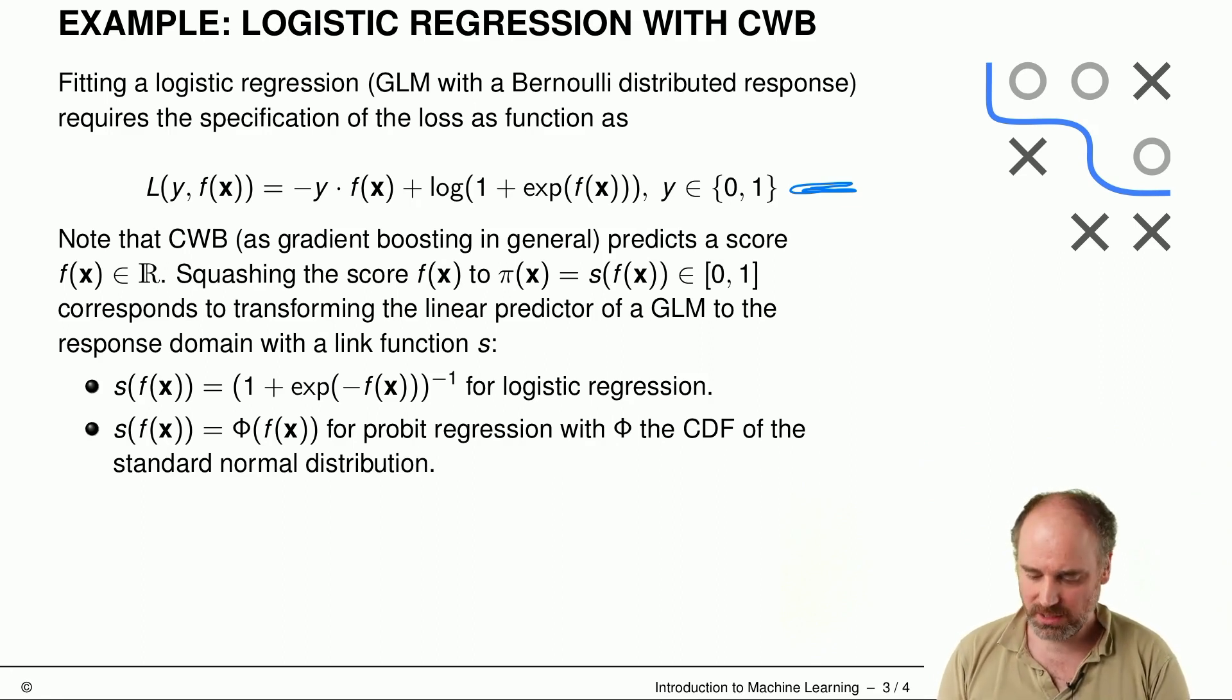We still have to transform our score predictor, our f, potentially into a probability function, so we can do that by squashing it through the logistic transfer function.